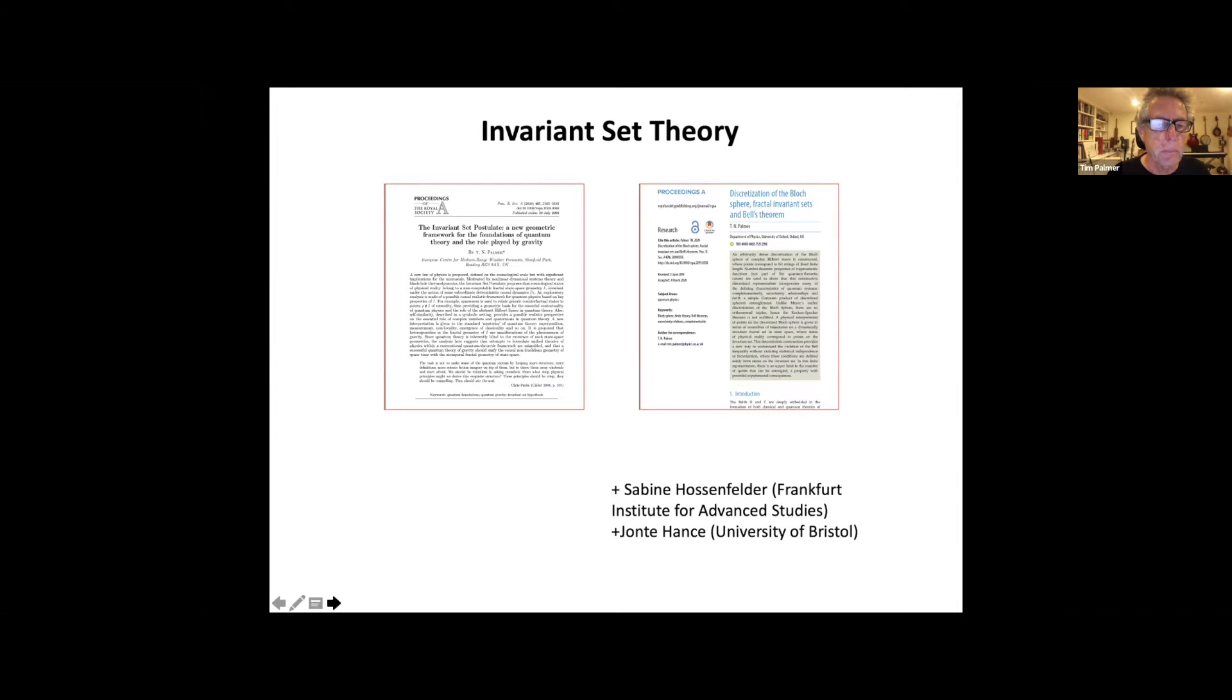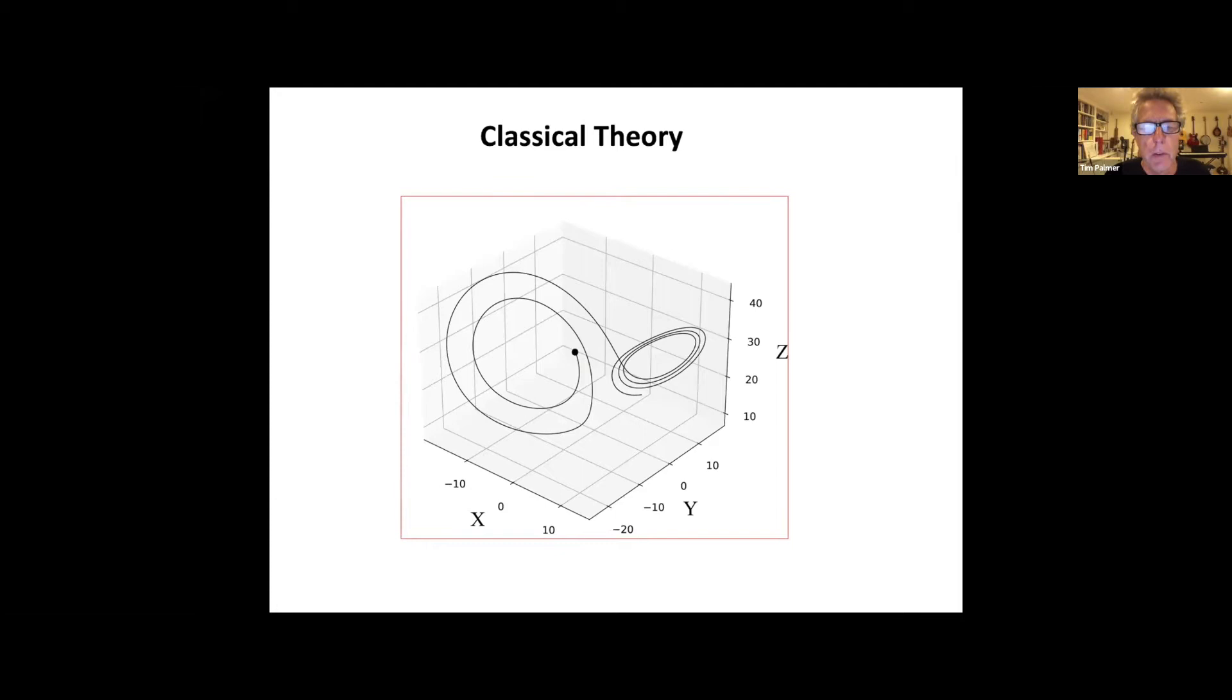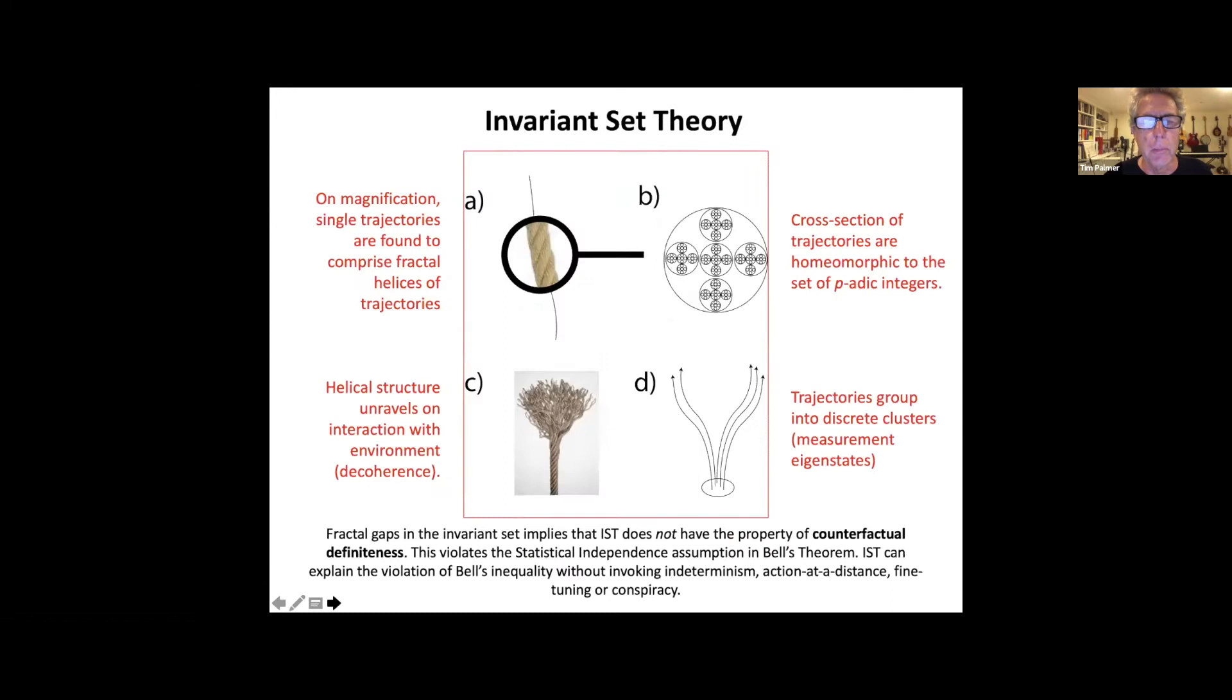I want to give you a flavor of what Invariant Set Theory is all about. I'll start with a classical system, which is the Lorenz equations, famous three-component Lorenz equations. I've just shown a finite trajectory of those equations in the three-dimensional state space. A trajectory is just a one-dimensional curve that maps out the integral curve of the differential equations which define the dynamical system.